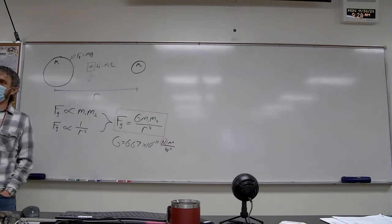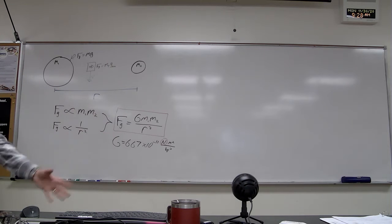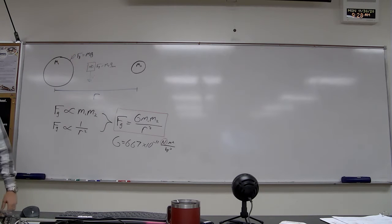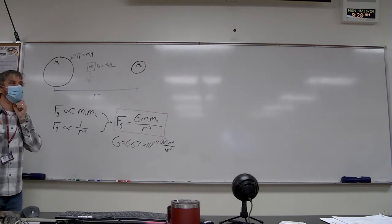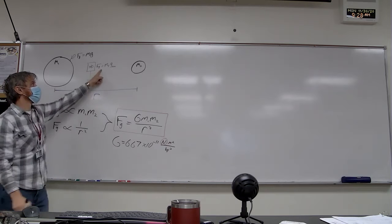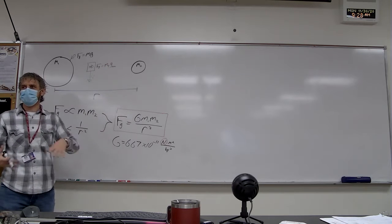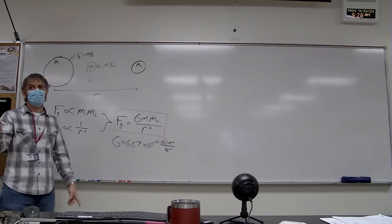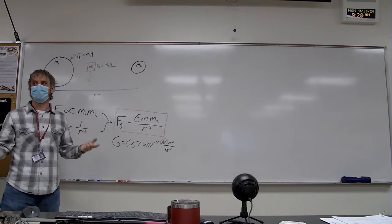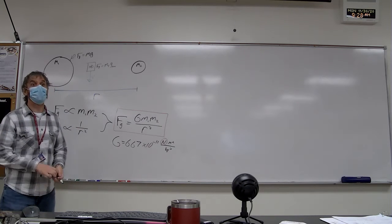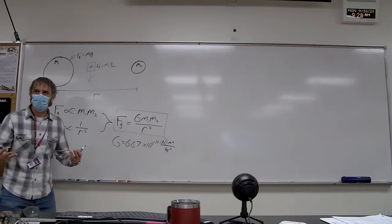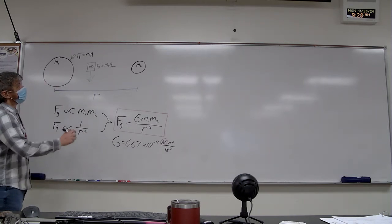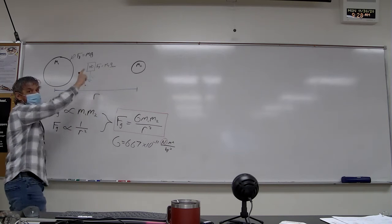g is the same everywhere on the surface of the Earth, but as you get significantly far off the surface, g actually starts to go down. So even when you're in orbit, they are not weightless. They're apparently weightless because there's no normal force acting on them anymore. Remember, it's the normal force that gives you your apparent sensation of weight. That's why you feel heavier when an elevator starts accelerating upward. So we can determine g at different altitudes above the Earth.